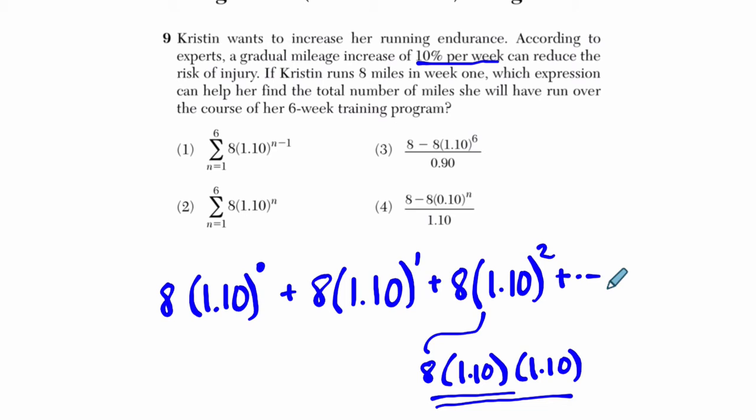And then we keep repeating this process until we get through six weeks. So notice the third week here added two as an exponent. The second week has one as an exponent, and the first week has zero as an exponent. So to get to the sixth, we would do 8 times 1.1 to the 5. This would be our sixth week. And then all together, we add all these up. You would get all the miles she ran, and that notation matches choice one.